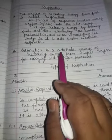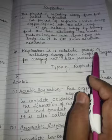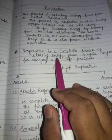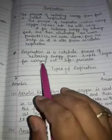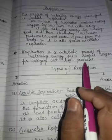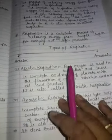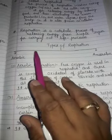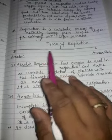Respiration is a catabolic process of releasing energy from simple sugar for carrying out life processes. Respiration is divided into two parts: aerobic and anaerobic.